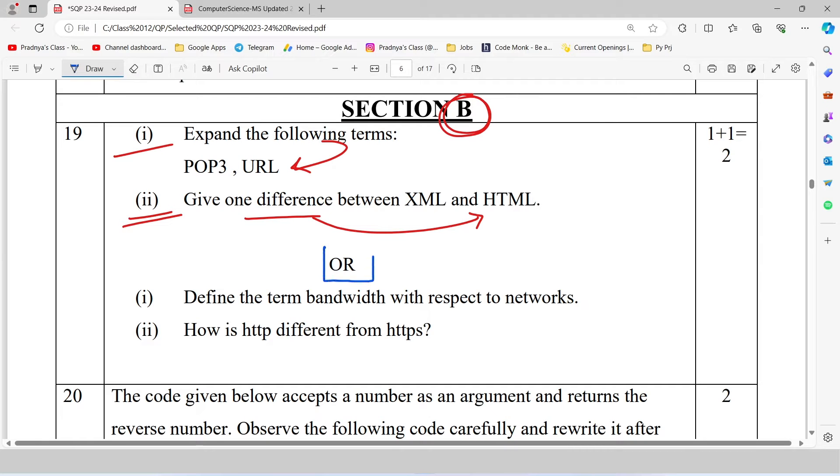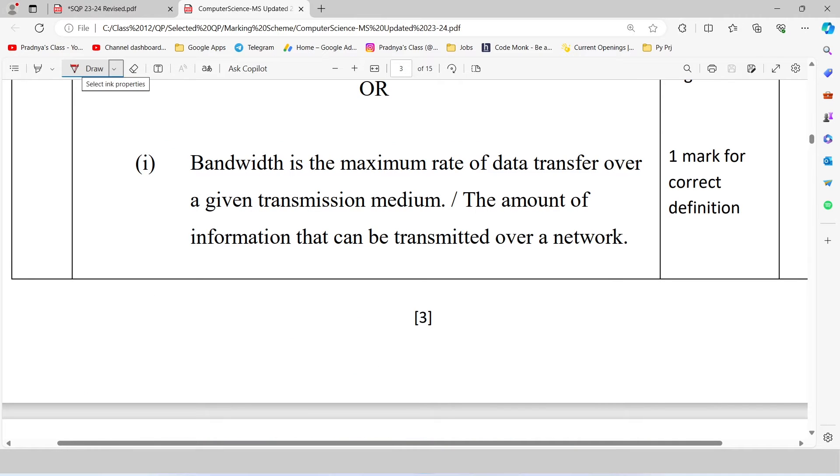Here is the OR part of the same question. We need to define term bandwidth. And in the second question we need to tell how HTTP is different from HTTPS. Look at the answer in the marking scheme. Bandwidth is the maximum rate of data transfer over a transmission medium. Data transfer is nothing but the amount of information that can be transmitted over the network. We know in networking we connect different devices to each other through one transmission medium. So the amount of data transferring over that medium is known as bandwidth.